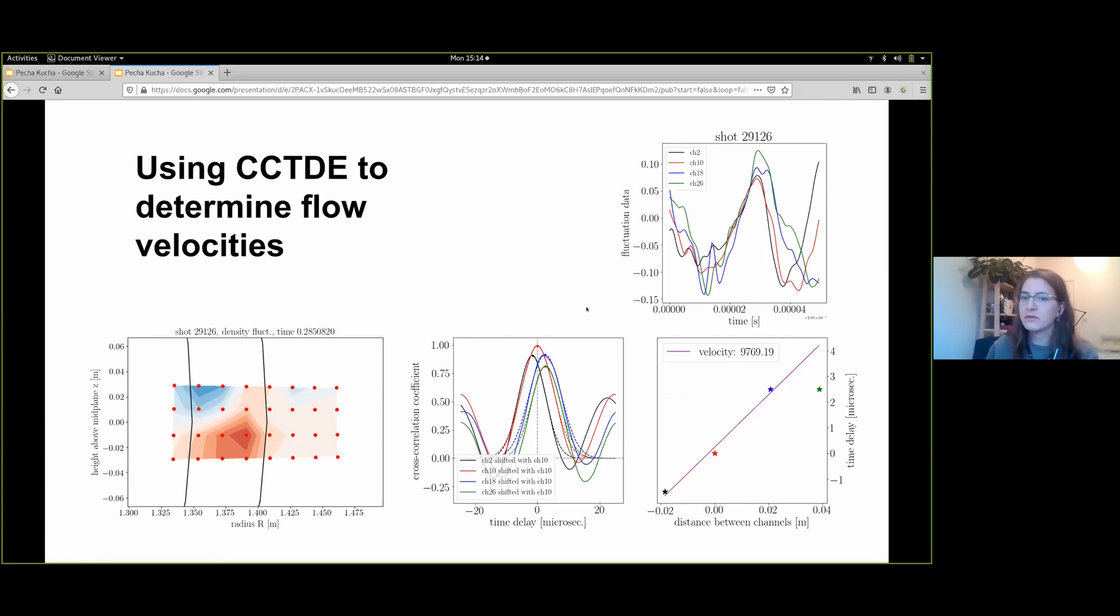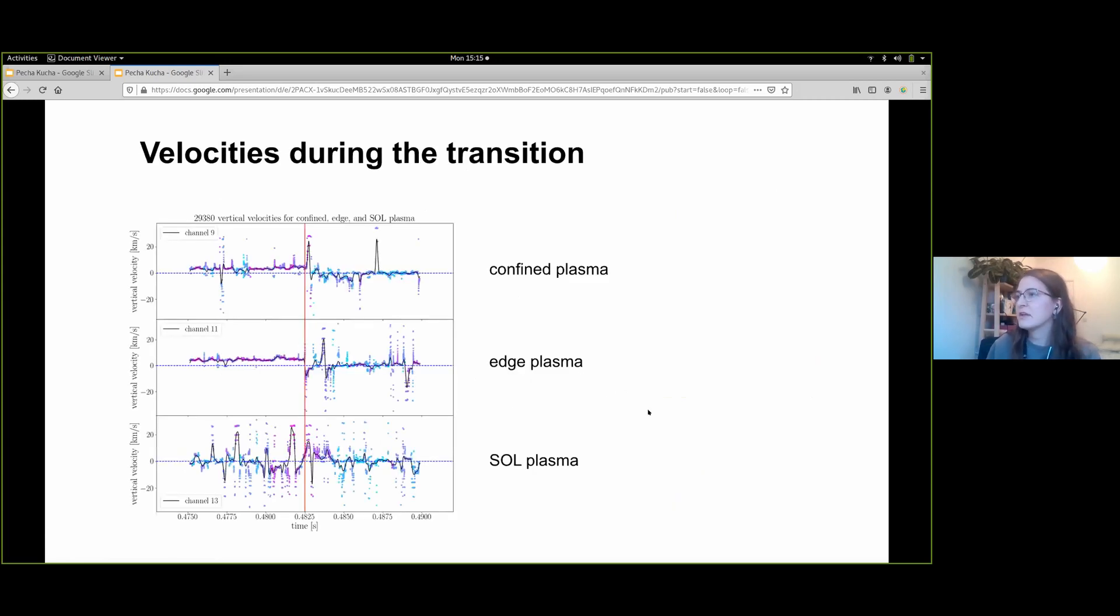Velocities of these fluctuations can be determined using cross-correlation time delay estimation, where fluctuation data of the channels in a column are shifted with regards to a reference channel, cross-correlated, and the time delay versus channel separation is plotted.